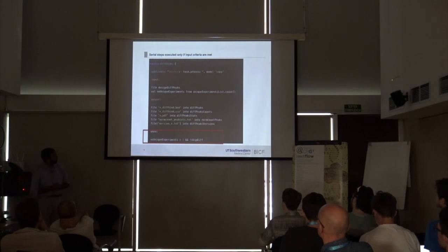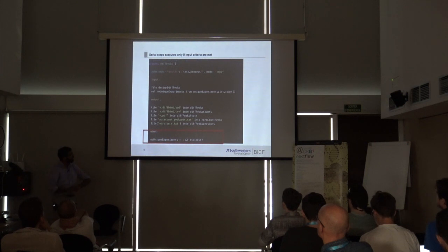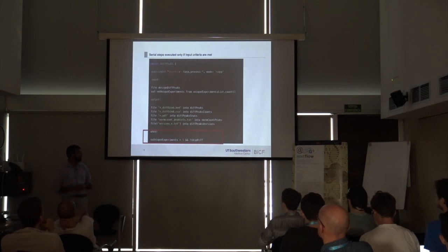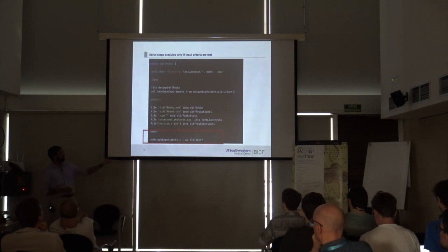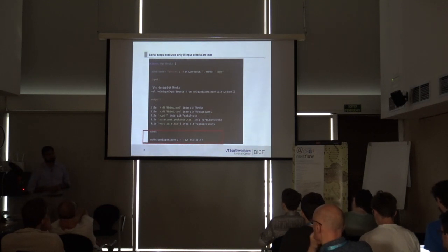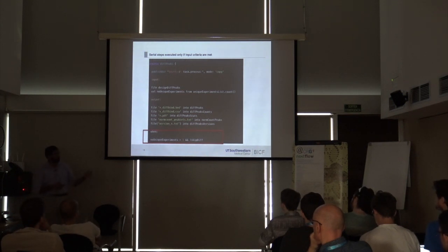We used the `when` directive for serial steps that execute only if input criteria are met. We check the number of unique experiments ahead of time — if they don't skip differential expression or differential peak calling, we run that step. Some users didn't know what skip-diff was and gave only one experiment expecting output, so now we can give them feedback on what to expect.